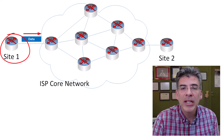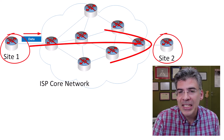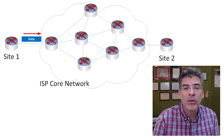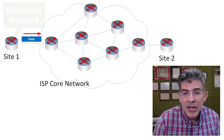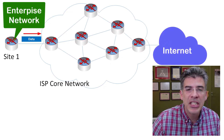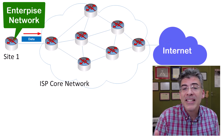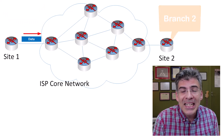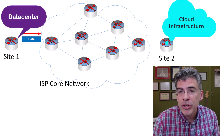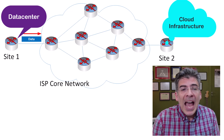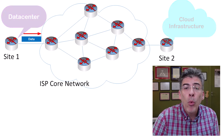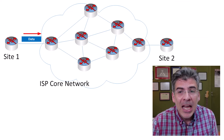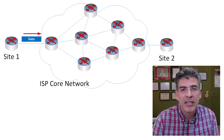Let's take a look at an example of the use of MPLS on the backbone network of an ISP. Here we have Site 1 and Site 2 interconnected over the ISP core network. Site 1 may be an enterprise network and Site 2 may be connectivity to the internet, or they may be two branch offices of a corporation, or a data center and a cloud infrastructure. What we care about is that the ISP must take data traffic from one site to the other.